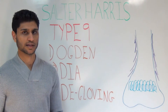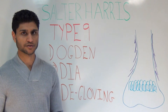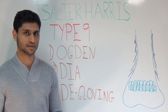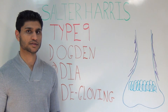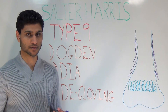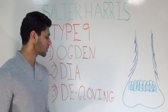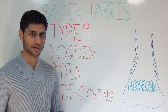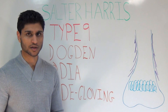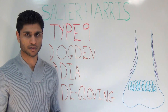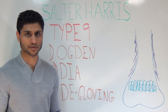Finally, an Ogden type 9 is an injury that occurs to the diaphysis. The periosteum of the diaphysis is stripped off. These are often seen with degloving-type injuries, like what you would see in a motorcycle accident, for example.